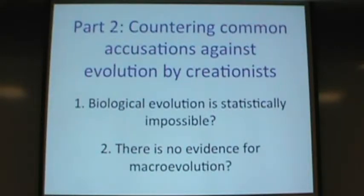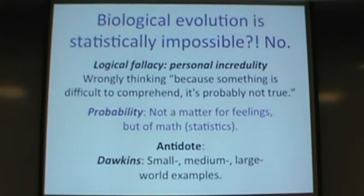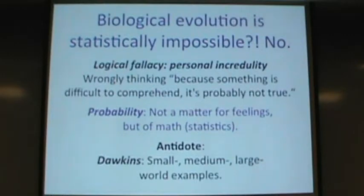My next section addresses two specific claims. One creationist claim is that biological evolution is statistically impossible, and the other is that there's no evidence for macroevolution — one species giving rise to another. One thing I want to address: some people say 'I know evolution is not true because life is so amazing and complex, it just cannot happen by itself.' But you can't say something is impossible — that is mathematical language of statistics, it needs to be calculated, you can't go by feeling on this.